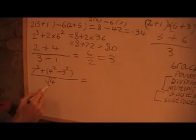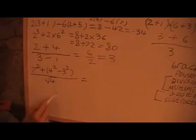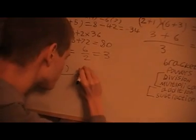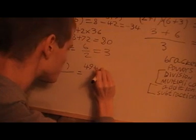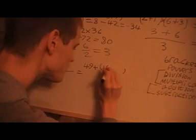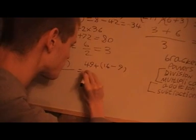Roots, or square roots, call them powers. The roots come under powers. So I'm going to do 7 squared, 49, plus that's 16 minus 9, and that comes to 2.